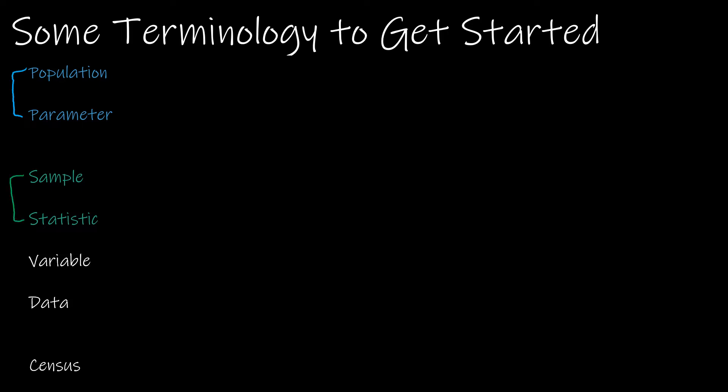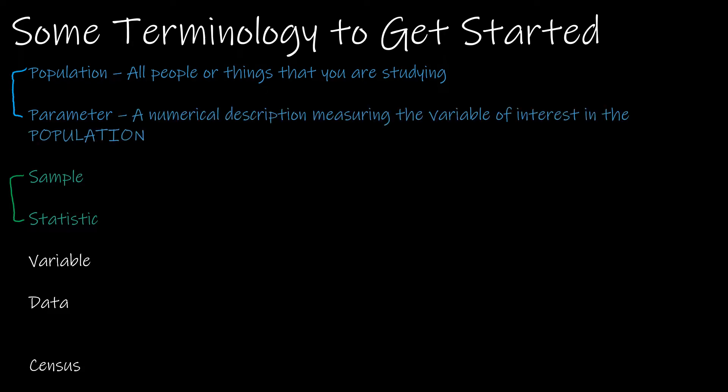So what is the difference? A population is the entire body of things that we are studying. If we were studying students at Bellevue University, then that would be the population. Whatever we're studying about those students — say GPA or marital status — is called a parameter. It's a numerical description that measures whatever variable we are studying.